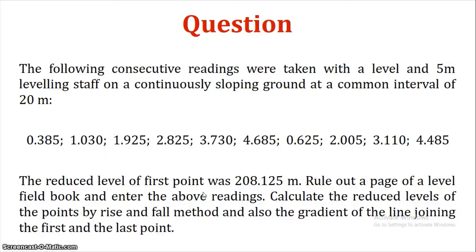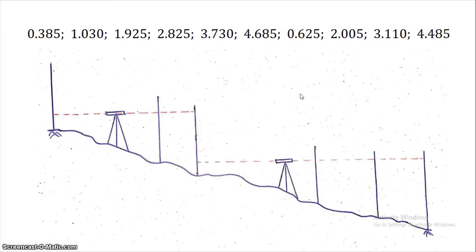The instrument was shifted after certain readings. We need to identify the readings as back-site and fore-site. The whole intersection can be identified as a fore-side. The leveling of the continuous site will be done on the slope of the ground.